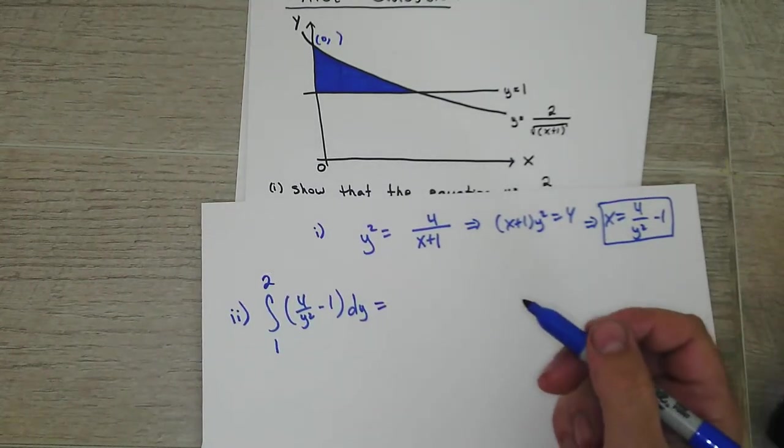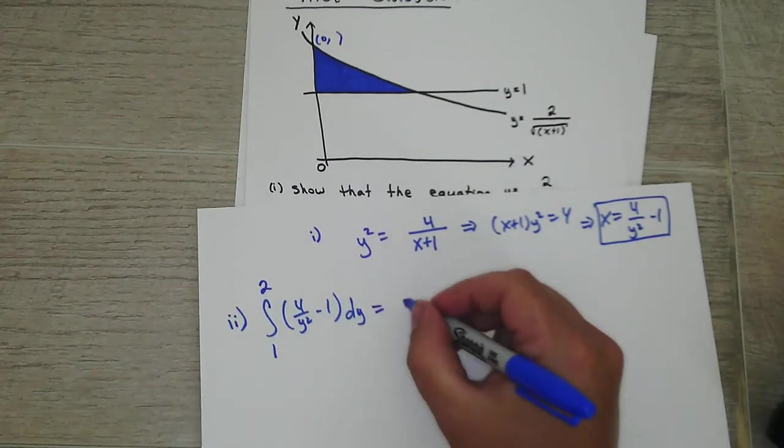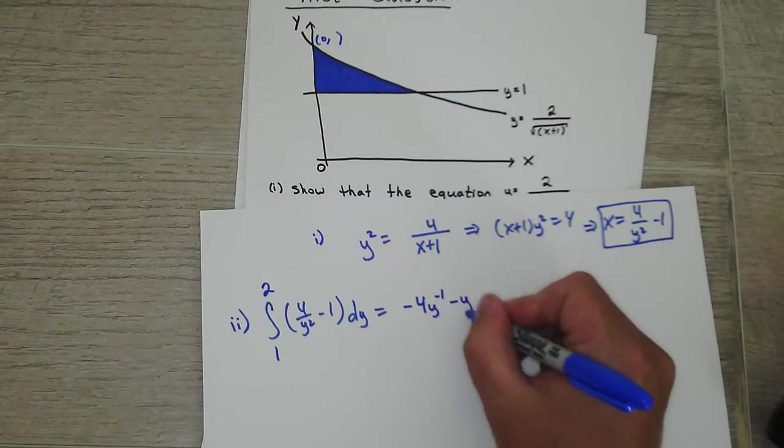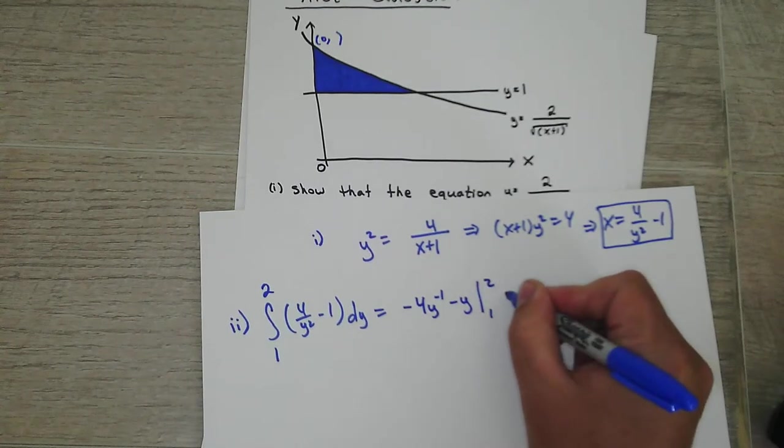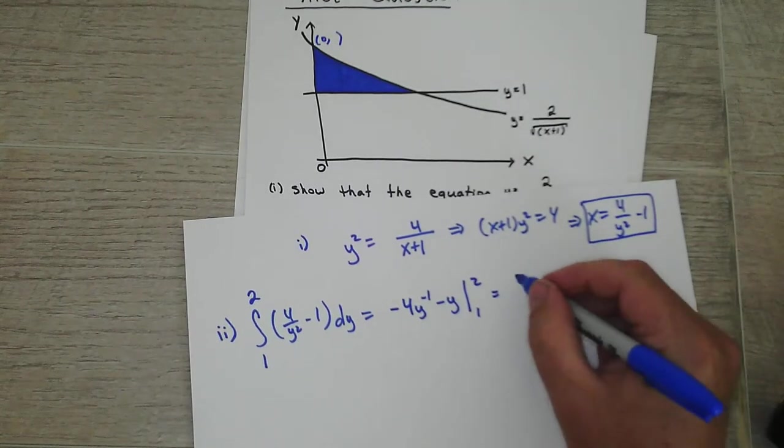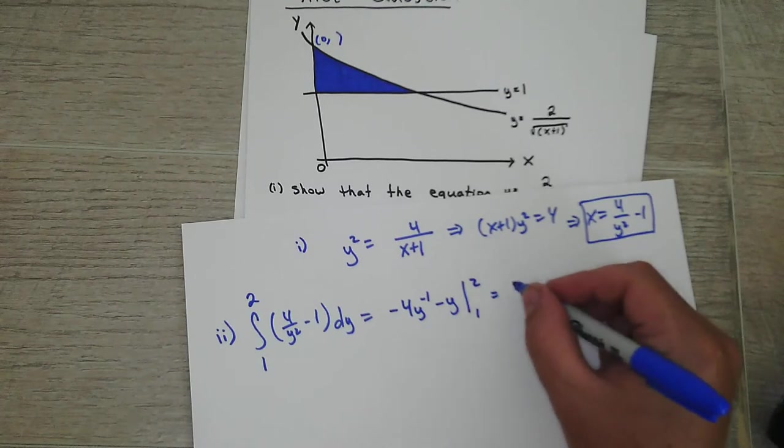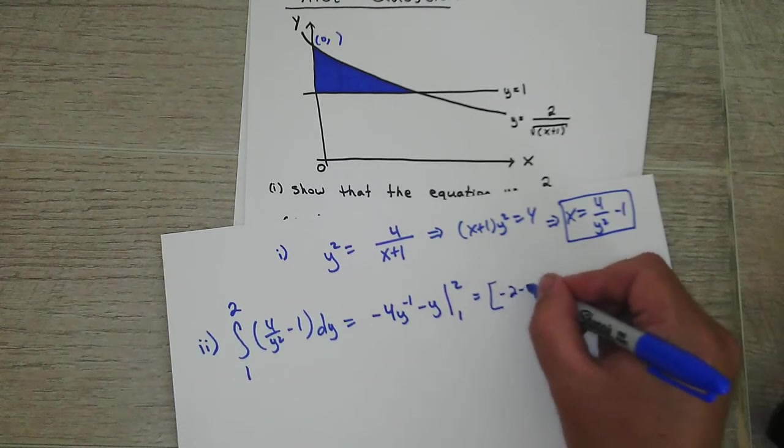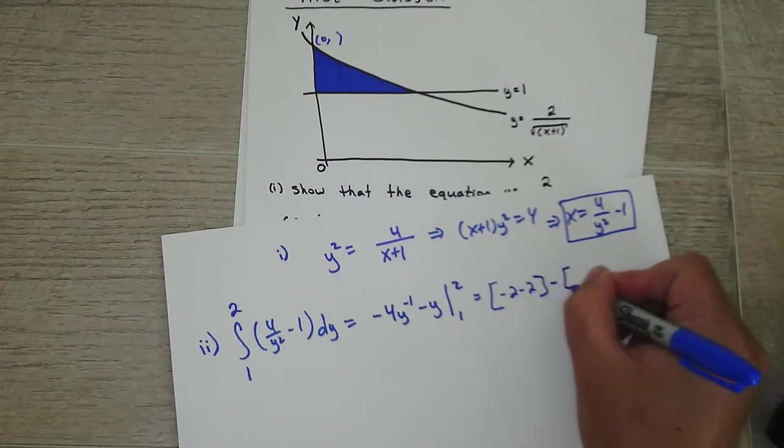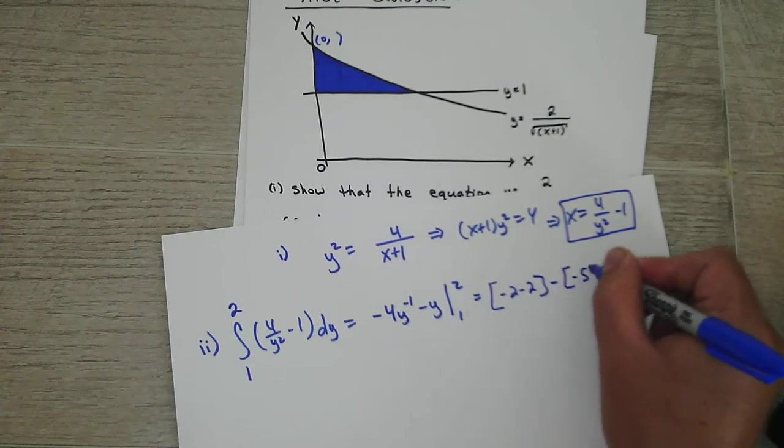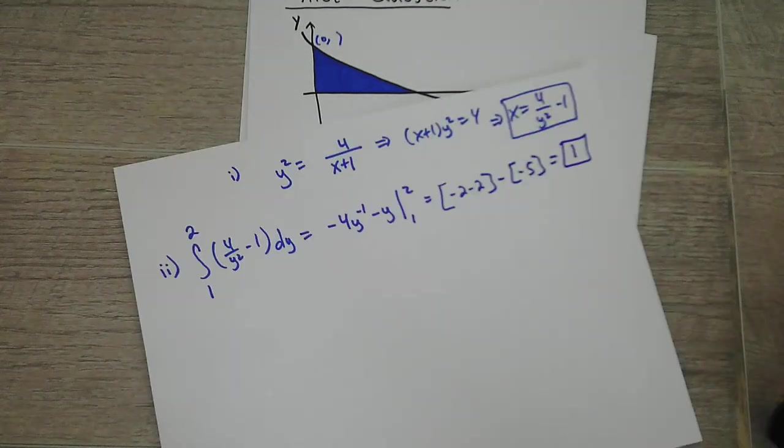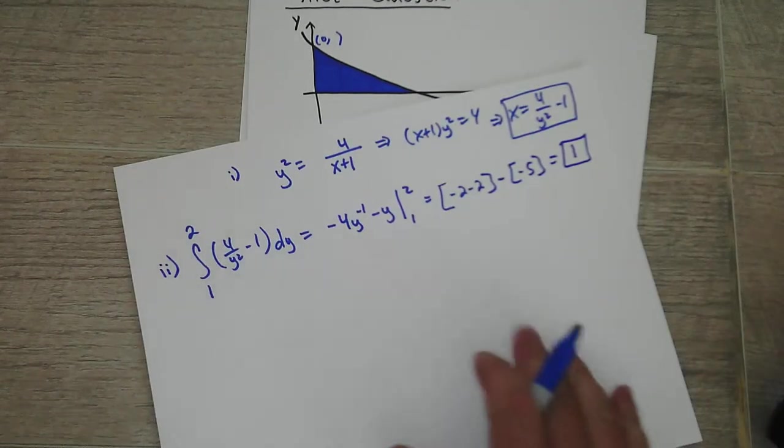Okay, so now we can go ahead and integrate this. So integrate it correctly, you'll get negative 4y to the negative 1 minus y, evaluate it from 1 to 2. Plug all those in correctly, and you'll get, let's see, negative 2 minus 2 minus negative 5. That makes that a positive, so you get 1. Okay, so that's the area.